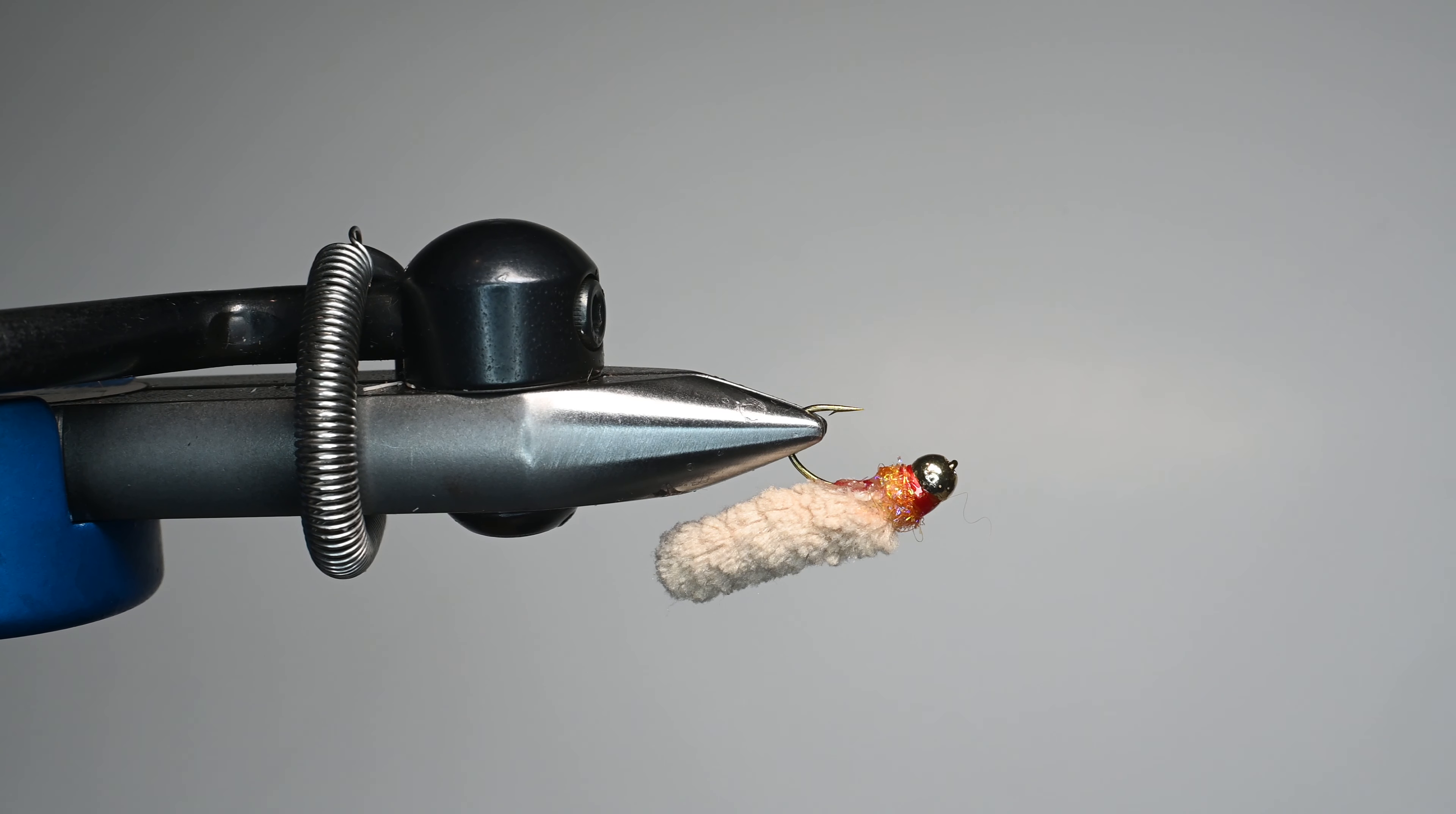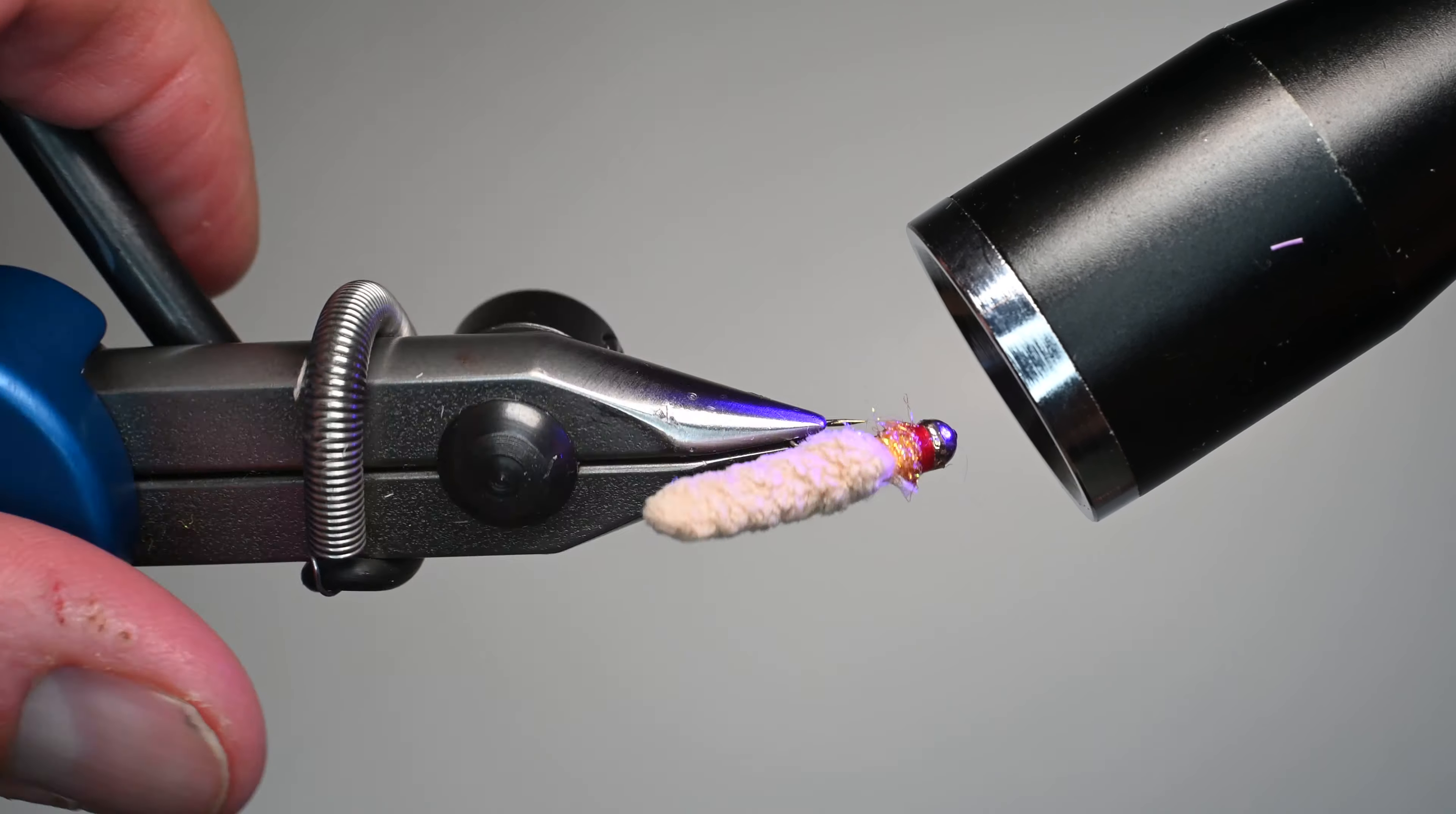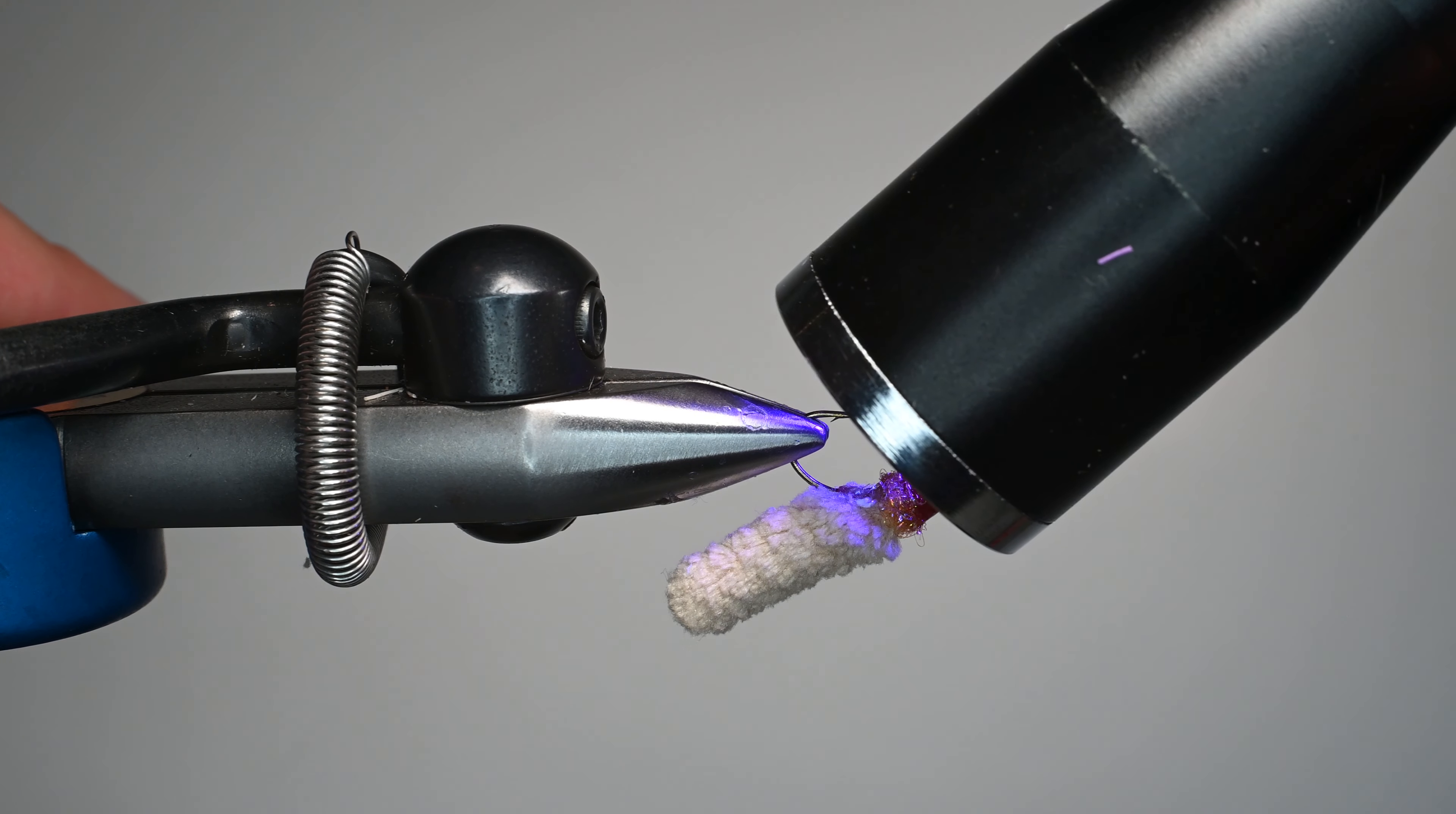So go ahead and use your UV light and you want to cure that for about 10 to 15 seconds being careful not to look into the light and I'm struggling to find mine but I think it's right here and so we'll just go ahead and cure that up rotating it around giving it even curing over the entire fly and that way you know it's just going to be rock solid and that is a super simple super effective pattern.